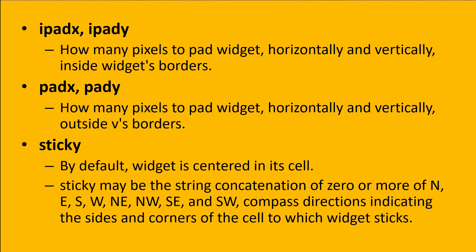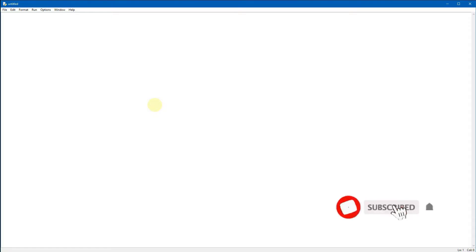We also have sticky. By default a widget is centered in its cell. Sticky may be a string concatenation of compass directions: N, E, S, W and combinations like NE, NW, SE, SW - indicating the sides and corners of the cell to which the widget should align.